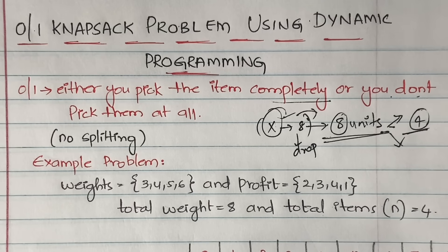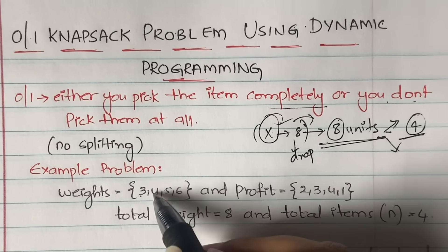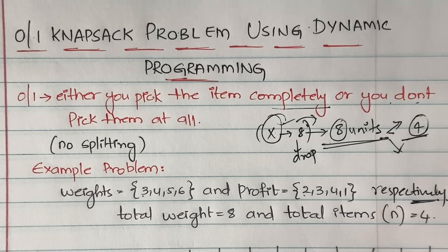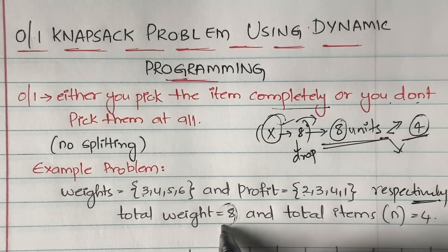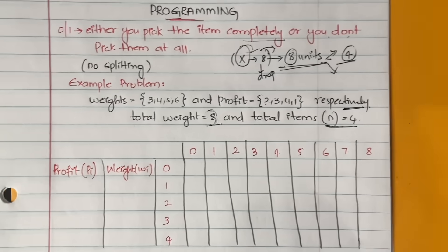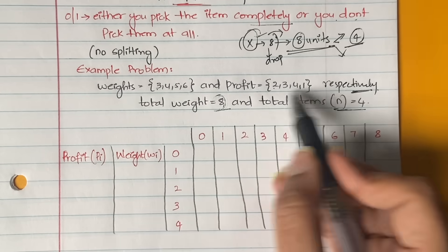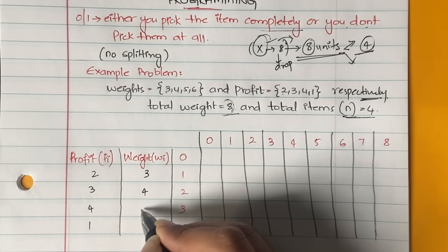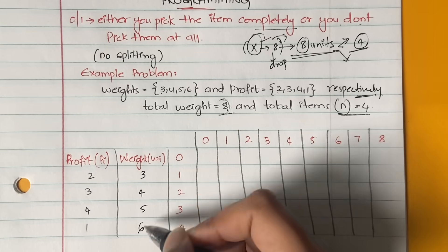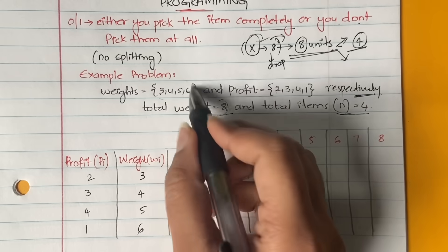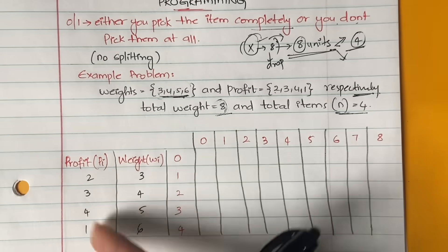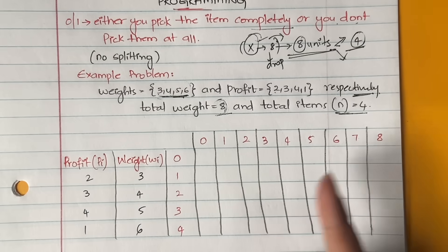Let's get started. Our example has weights 3, 4, 5, 6 and profits associated with them are 2, 3, 4, 1 respectively. The total capacity of the knapsack bag is 8 and there are 4 total items. In the matrix, write all the profits 2, 3, 4, 1 and the weights 3, 4, 5, 6. Weights should always be written in ascending order — if they are not in ascending order in the question, reorder them here along with their respective profits.